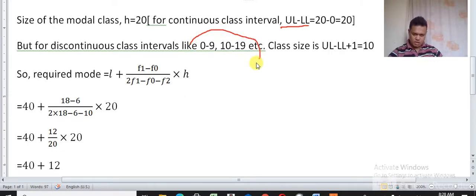If the classes are not continuous, like 0 to 9, 10 to 19, then class size will be upper limit minus lower limit plus 1. So for class 0 to 9, 9 minus 0 is 9 plus 1 is 10. So for this class also, class size will be 10. In this way we can find class size of class intervals.